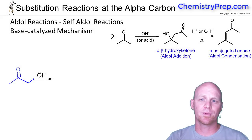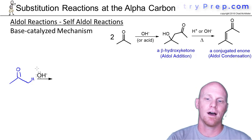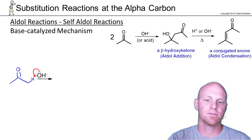Now we're going to take a look at the mechanisms for the aldol reactions, starting with the base-catalyzed mechanism, the easier of the two. The first step is simply going to be deprotonation of the alpha carbon, forming your enolate ion.